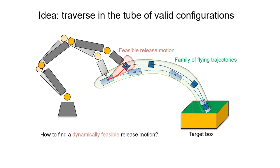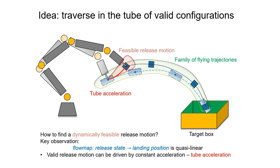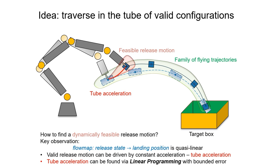How do we find a dynamically feasible release motion? The synthesis of release motion is based on the following observation: the flow map, which maps from the release state to landing position, is quasi-linear. This observation has two implications. First, valid release motion can be driven by constant acceleration, which we call tubal acceleration. Second, tubal acceleration can be found via linear programming with bounded error.